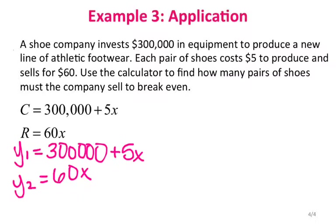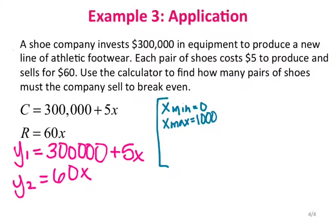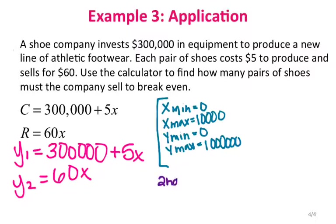After adjusting the window to x min 0, x max 10,000, x scale 10, y min 0, and y max one million, both lines are clearly visible. To find the intersection, I'll use the keystrokes: 2nd and trace, then select intersect, hit enter three times.